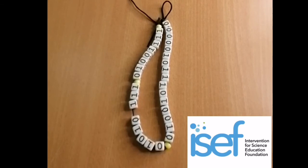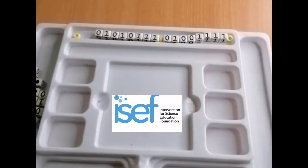Now, let's make a binary necklace using our ASCII code. For this project, we need beads of zeros and ones, a tray, and a code.